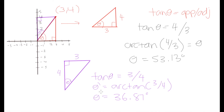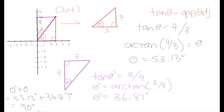That value of 36.87 degrees is theta prime, not theta. If we sum theta prime and theta together: 53.13 degrees plus 36.87 degrees equals 90 degrees. Looking at both angles, we can see they make up the entire first quadrant. Together they form 90 degrees, because the x-axis and y-axis are perpendicular to one another.